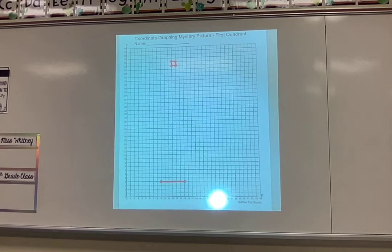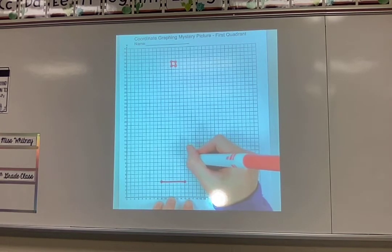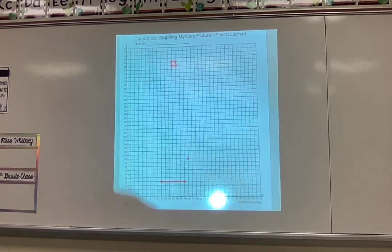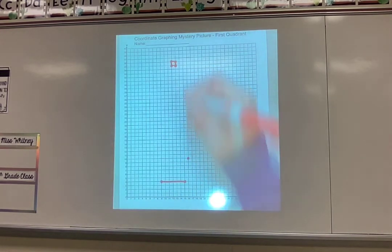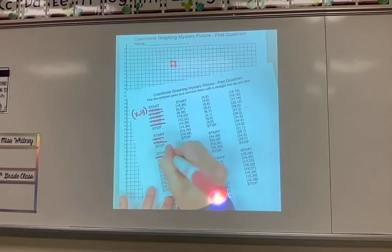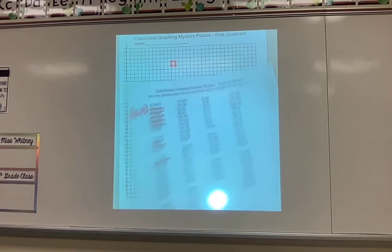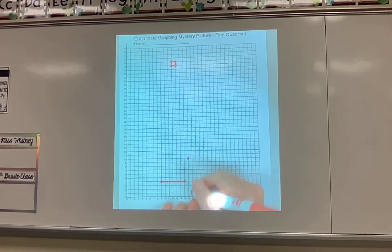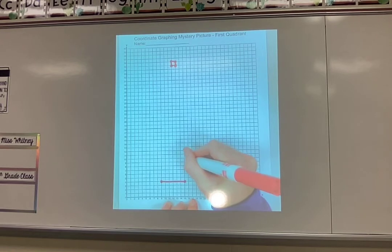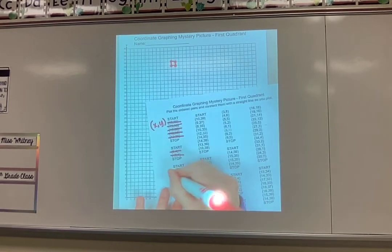Sixteen ten. Go over to sixteen. Up to ten. Double checking before I put my dot down. Don't want it to be in the wrong spot. And remember I'm not connecting that with anything because I'm starting a new piece of my picture. Cross it off and then I would go to the next one. Seventeen ten. So seventeen up to ten. And connect those because I'm in the same section here. Then I would cross that off.